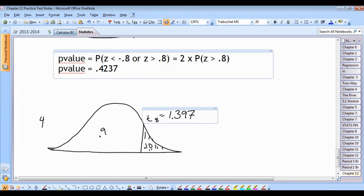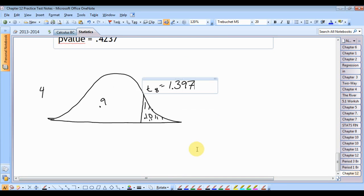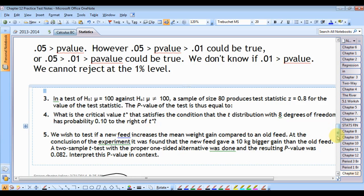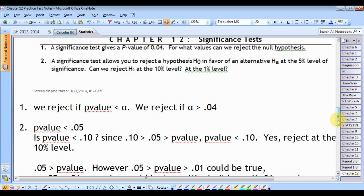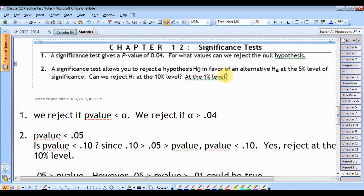We had technical difficulties in period one. Okay, so we're going to start by looking at a few of these. I'm getting very worried in the back that you're not going to shut up eventually. Okay, we're taking a look at number one. We have a significance test. It has a p-value of 0.04. For what values can we reject our null hypothesis?